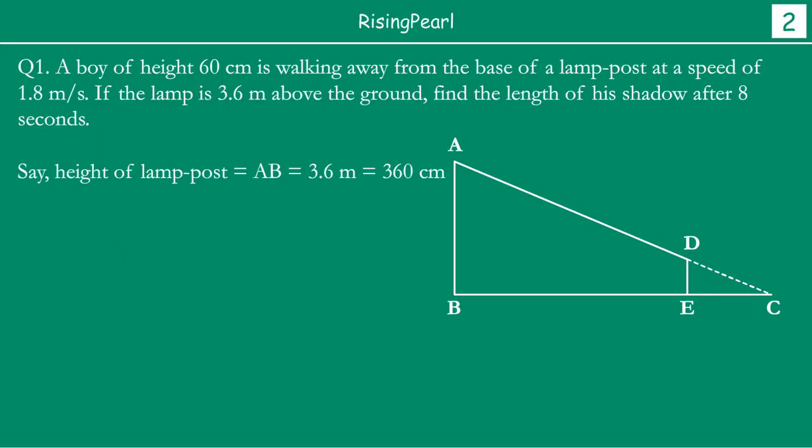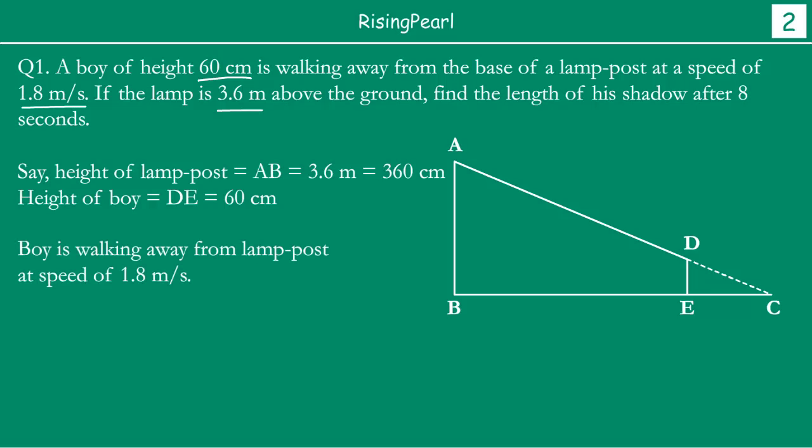So here we have. Now let's see how are we going to solve this. So first of all, let's write it the proper way. Height of the lamppost is 3.6 meter. Which is equal to 360 centimeter. We want to get all the dimensions in centimeter. Because the height of the boy is 60 centimeter. And the lamp is given in meter. Similarly the distance traveled. We would want to bring that also in centimeter. Then height of the boy DE is 60 centimeter. Boy is walking away from the lamppost at a speed of 1.8 meter per second. ADAC is the light ray. EC is the length of the boy's shadow.